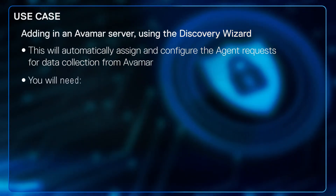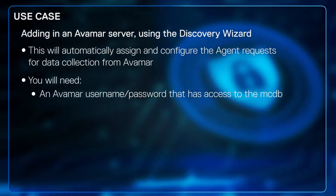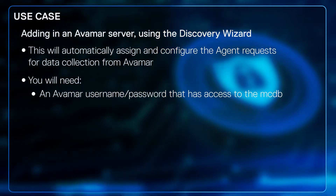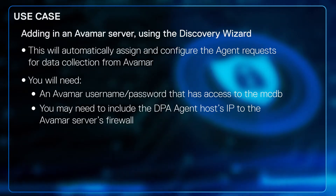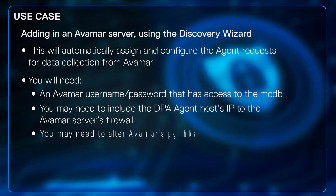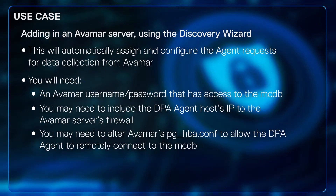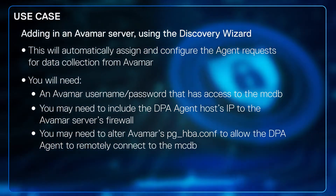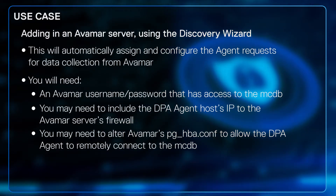Before you begin, you will need an AVAMAR username and password that has access to the MCDB — that's AVAMAR's MCDB. You may need to include the DPA agent host's IP address to the AVAMAR server's firewall. You may also need to alter AVAMAR's pg-hba.conf file to allow the DPA agent to remotely connect to the MCDB. You may also need to reload the MCDB — it's like a restart, but you do not have to reboot the AVAMAR server itself, so there's no downtime.